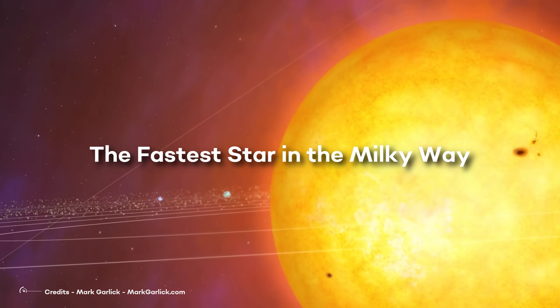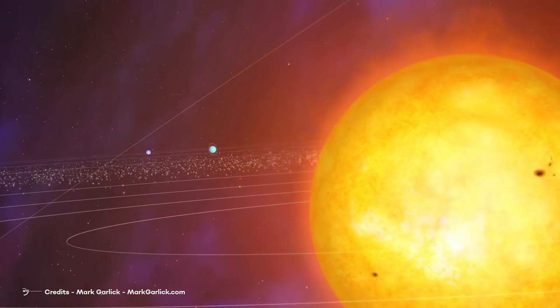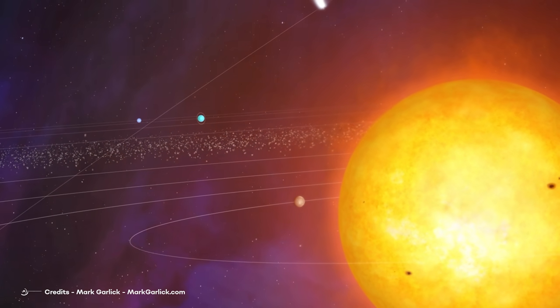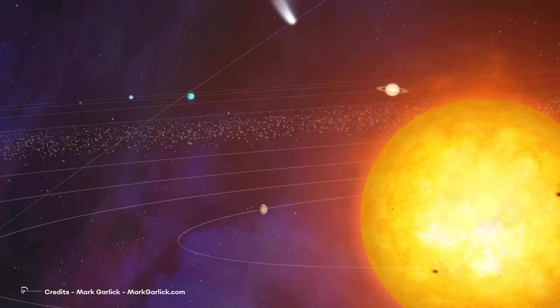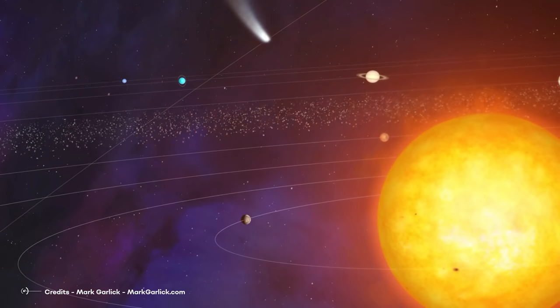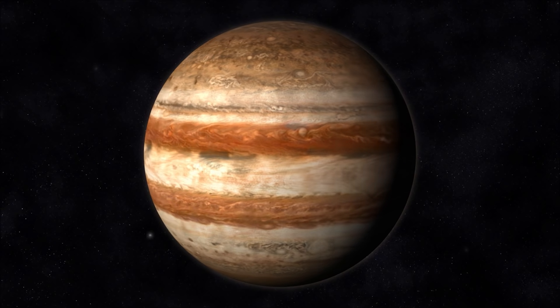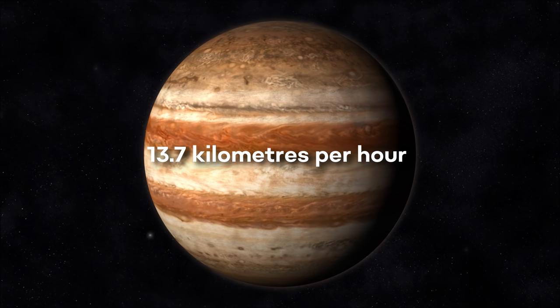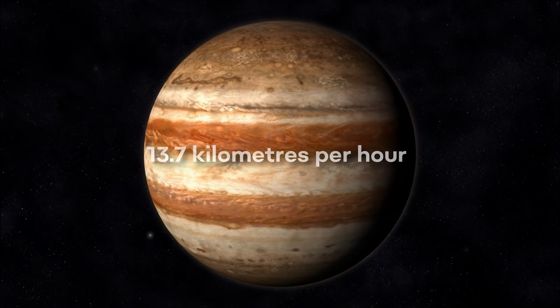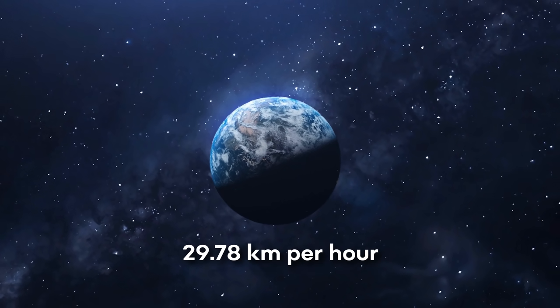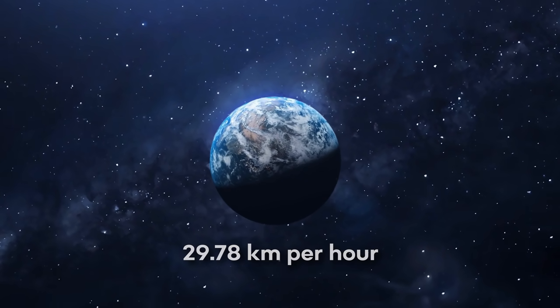The fastest star in the Milky Way. We all know planets orbit around their host star, some of them go faster than others, and all of this depends on how distant they are from the star. For example, Jupiter travels at an average velocity of 13.7 km per second in its orbit around the Sun, while the Earth at about 29.78 km per second.